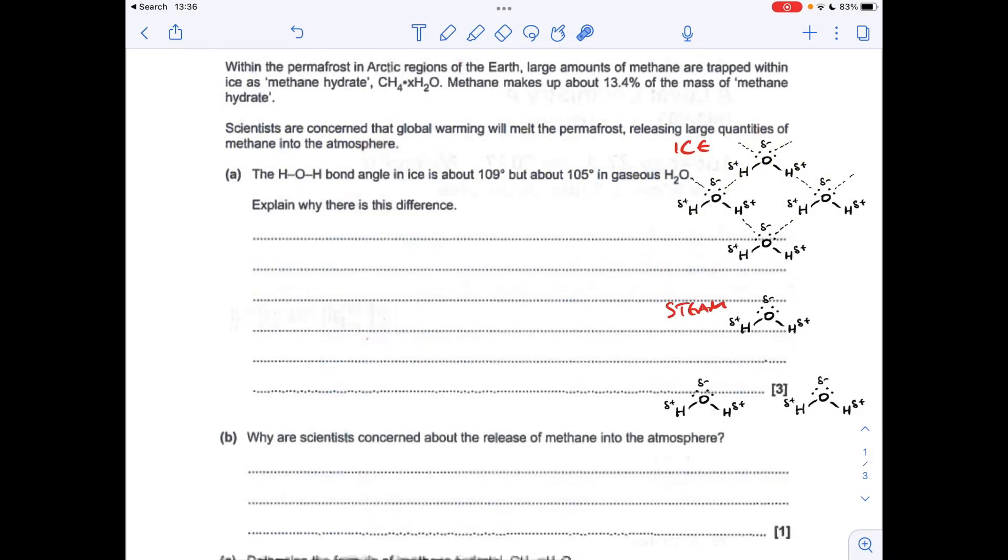Okay, so making a start to explain part A, I've drawn two diagrams to represent ice and steam. If we look at the ice diagram first, you can see we've got hydrogen bonds connecting the lone pair on this oxygen here to the hydrogen on a neighboring H2O molecule. So we've got this open lattice structure if you remember from your H2O theory.